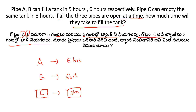If all three pipes are open at the same time, we compute the net rate. Take LCM of 5, 6, and 3 to find total tank capacity, which gives 30 units.